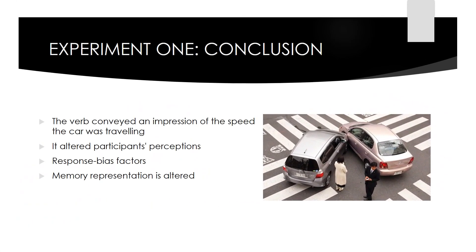The results of the first experiment showed that the verb conveyed an impression of the speed the car was traveling at, and this altered the participants' perceptions. In other words, eyewitness testimony might be biased by the way that questions are asked after a crime is committed.